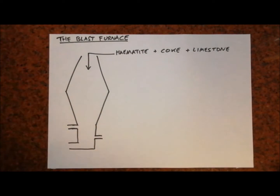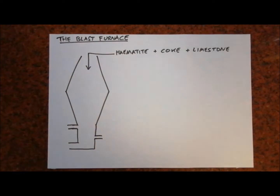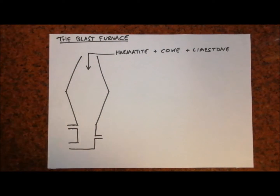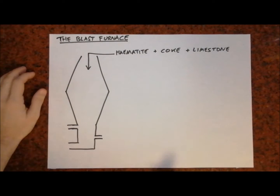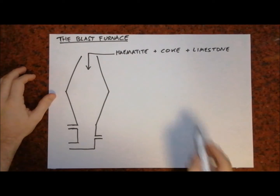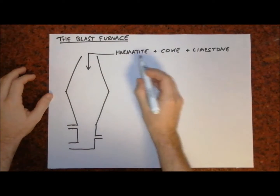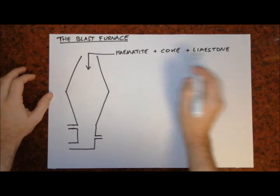Today we're going to be looking at extracting iron using a blast furnace. There are three raw materials we need to add to the blast furnace: hematite, coke, and limestone.